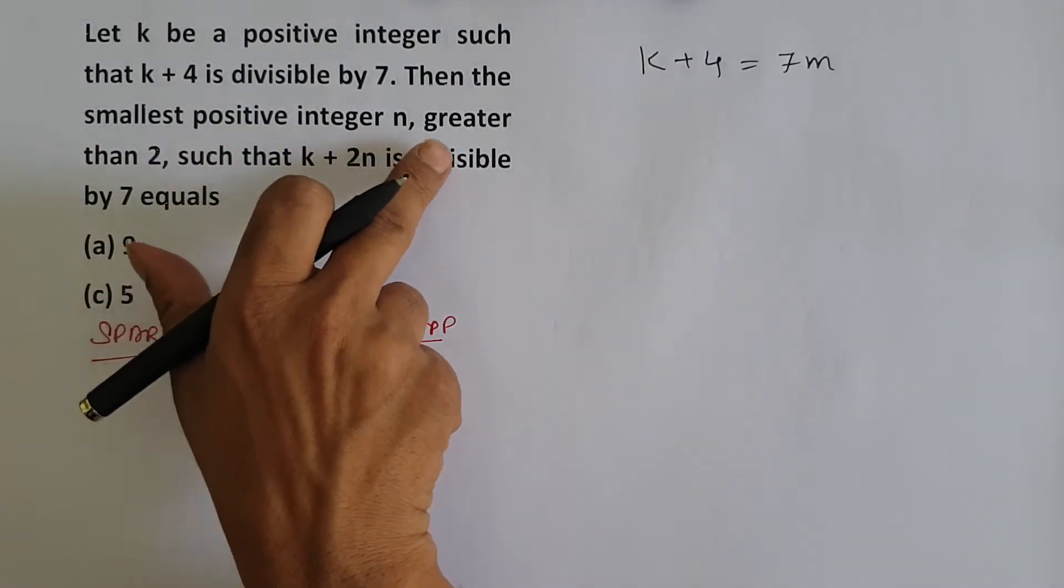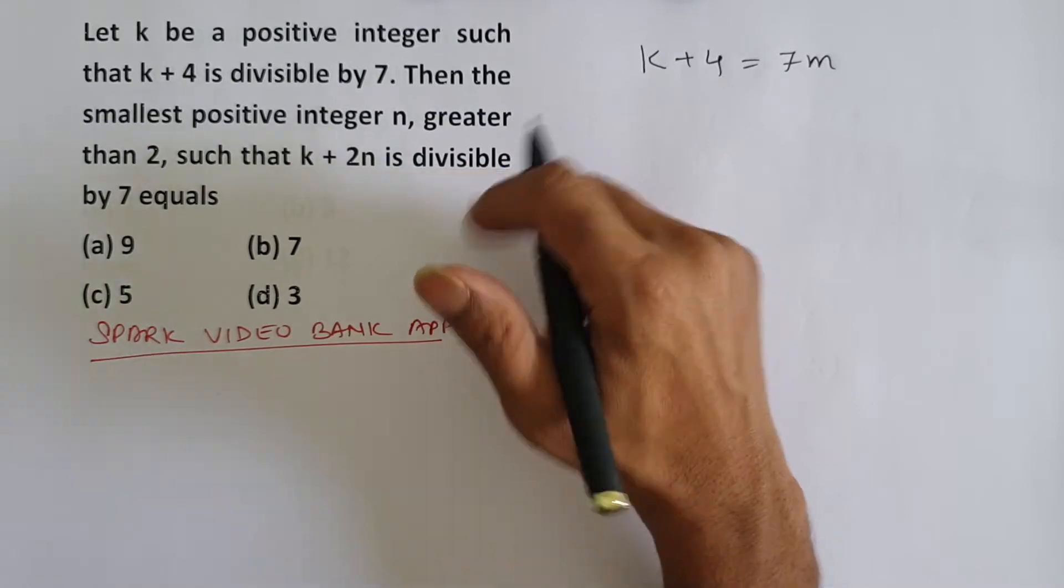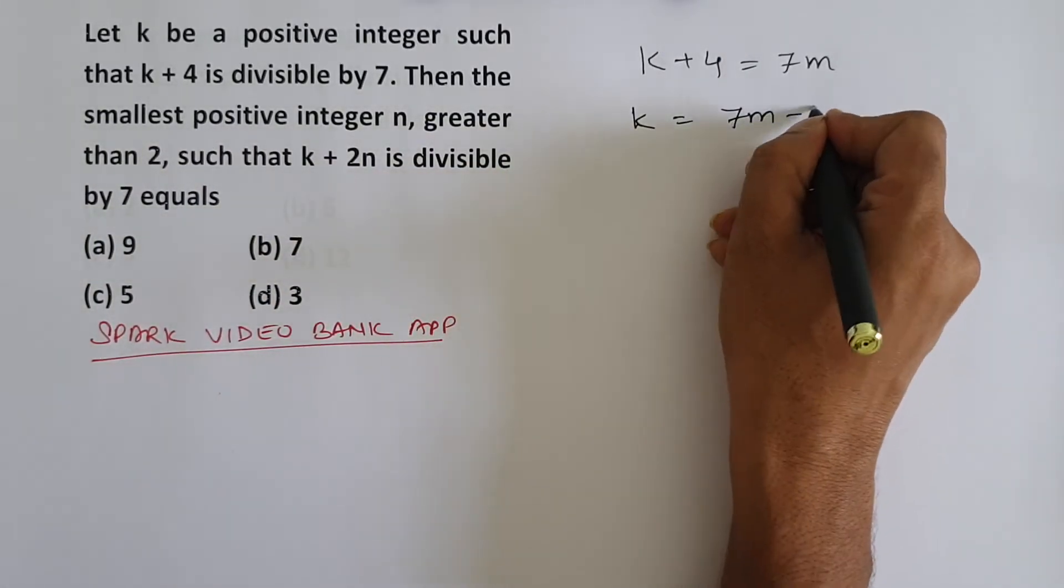Then the smallest positive integer n greater than 2 such that k plus 2n is divisible by 7. So k is equal to 7m minus 4.